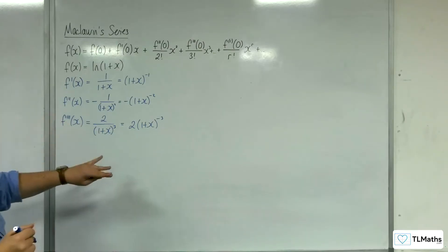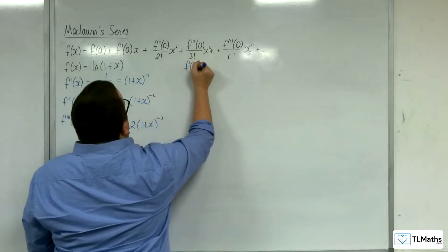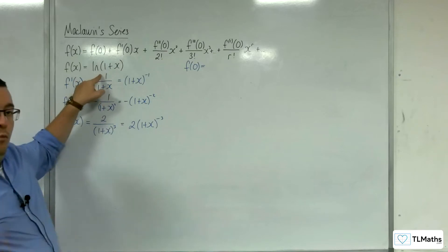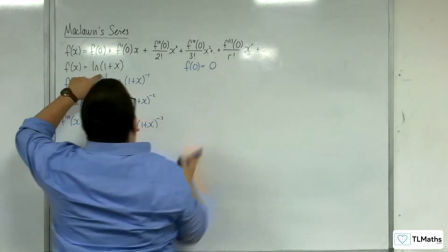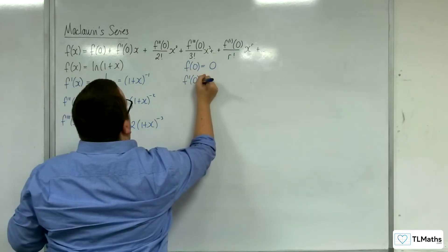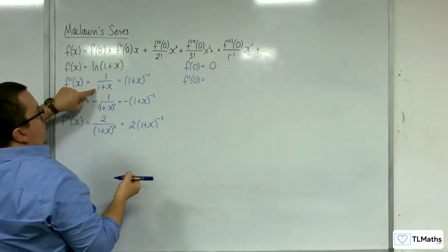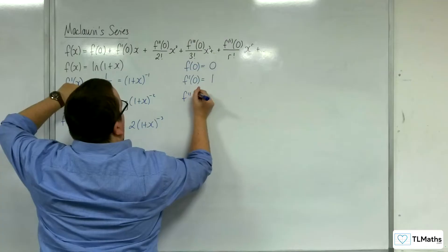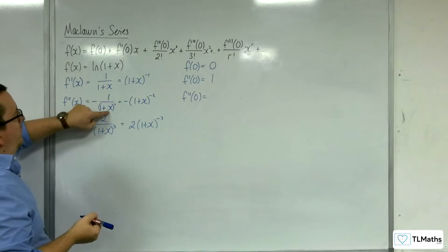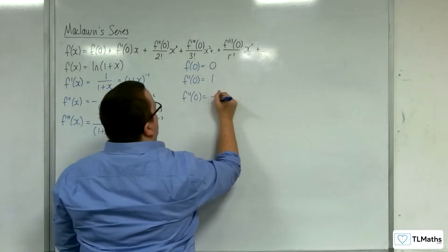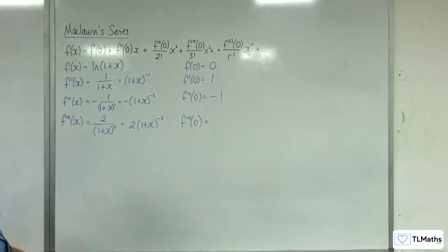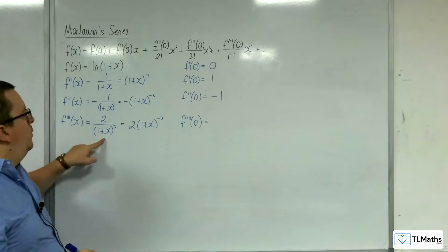With those done, if I now evaluate each of these when x is 0: f of 0 is log of 1 plus 0, so log of 1, which is 0. Then f prime of 0 is 1 over 1 plus 0, so 1 over 1, which is 1. f double prime of 0 is minus 1 over 1 plus 0 squared, so that's minus 1. And evaluating the third derivative at 0, we get 2 over 1, which is 2.